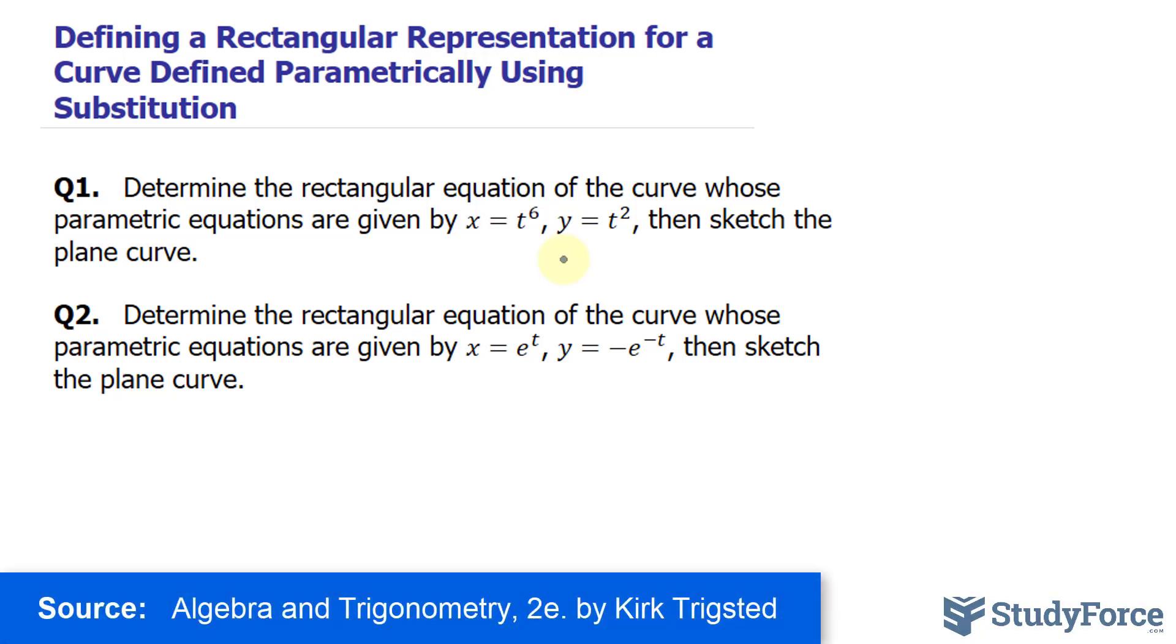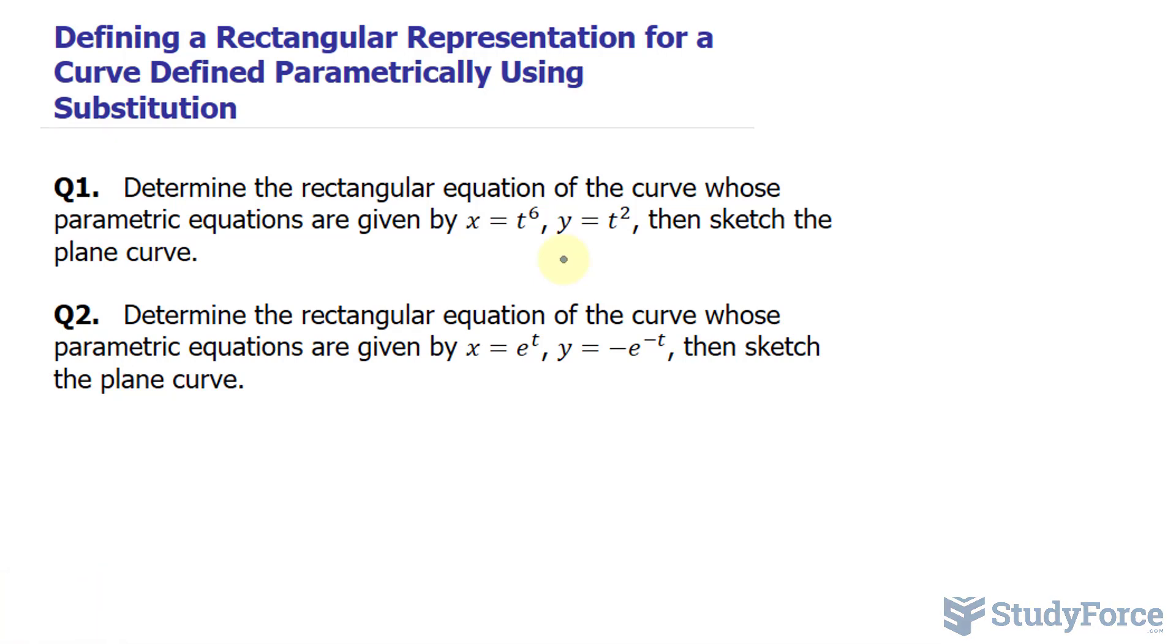To do this we have to use a technique known as substitution and that involves substituting parts of one equation into another so that we totally eliminate in this case t. So what I'll do is isolate for t here and I can do that by taking the sixth root of both sides.